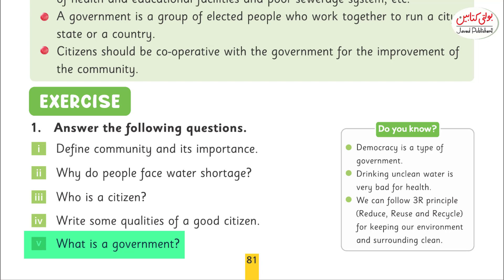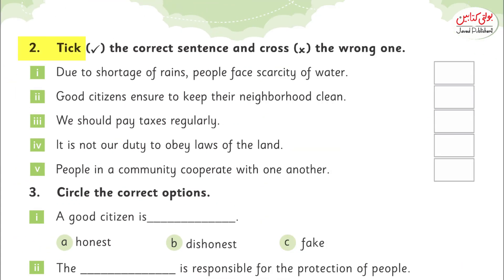A government works for the welfare of its people. Question number two: tick the correct and cross the wrong ones.